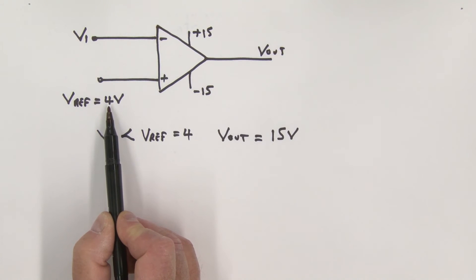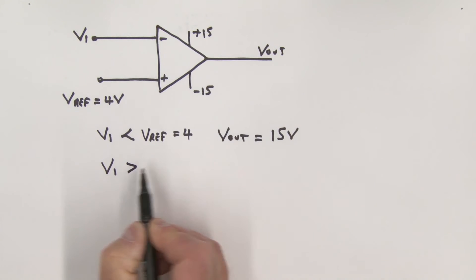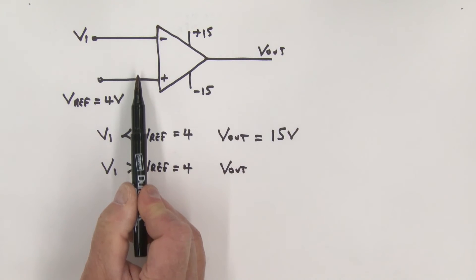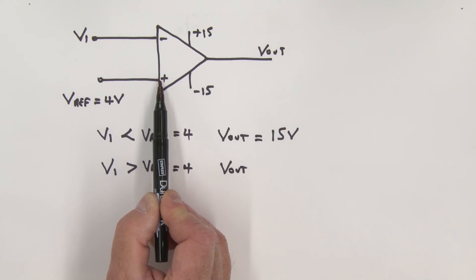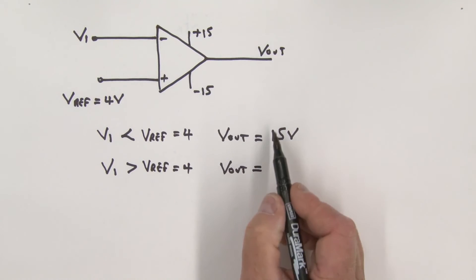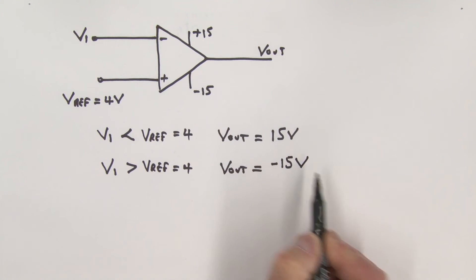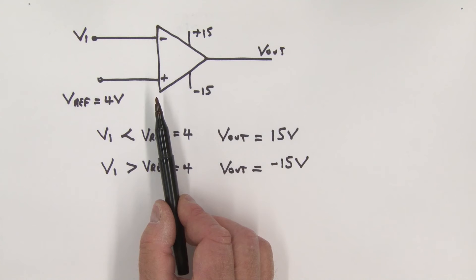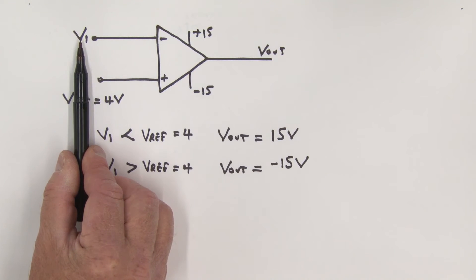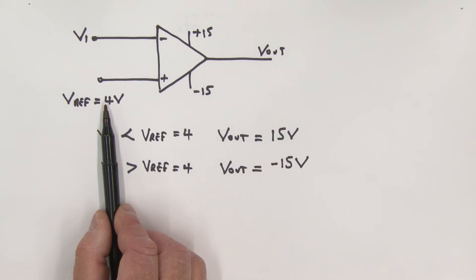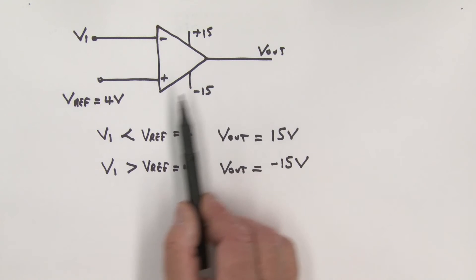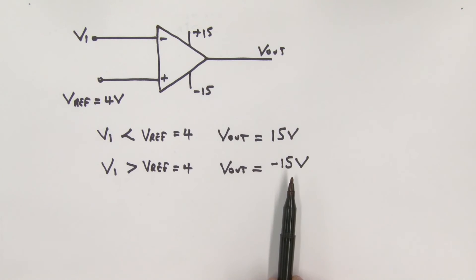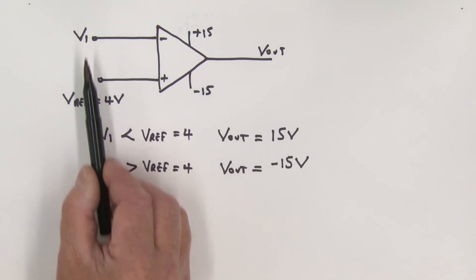If V1 becomes greater than the reference voltage of 4 volts, the inverting input is now larger than the non-inverting input and the output clips to minus 15 volts, limited by the power supply. This circuit acts as a comparator: we compare V1 to a reference. If V1 is less than the reference, output is +15V; if V1 is greater than the reference, the output switches to −15V.